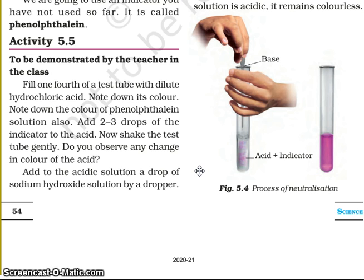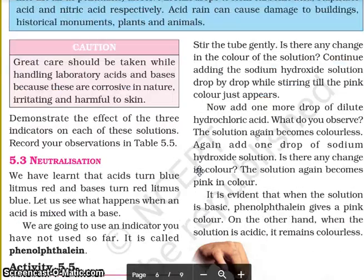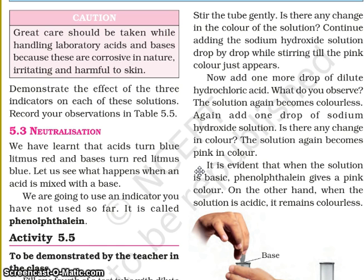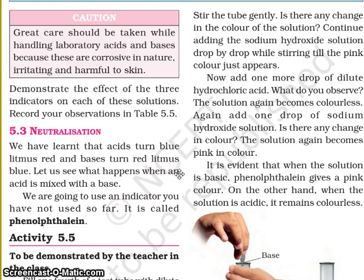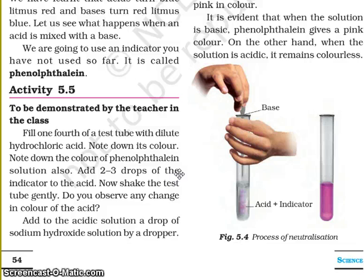Add to the acidic solution a drop of sodium hydroxide solution by dropper. Stir the tube gently. Is there any change in color of the solution? Continue adding the sodium hydroxide solution drop by drop while stirring till the pink color just appears. Now add one more drop of dilute hydrochloric acid. The solution again becomes colorless. Again add one drop of sodium hydroxide solution — the solution again becomes pink in color. It is evident that when the solution is basic, phenolphthalein gives a pink color; when the solution is acidic, it remains colorless.